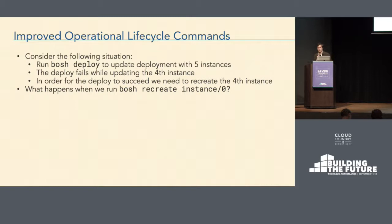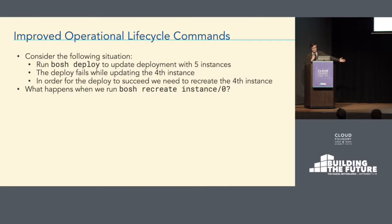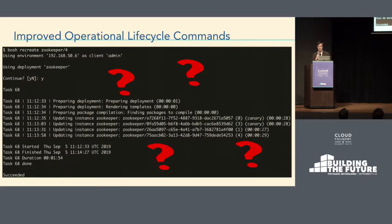One big thing we've been working on is the concept of fewer surprises for operators, specifically around lifecycle commands: start, stop, recreate, and restart. This slide calls out a situation that occurs in real life quite a bit: you're running a BOSH deploy to your deployment, you have five instances, and the fourth instance fails. You need to recreate an instance in order to get that deploy to succeed. Unintuively, what happens right now is it actually rolls back the deployment to the last successful state — almost like a deploy in itself but going backwards while also recreating the instance. From user interviews, this seems pretty unexpected.